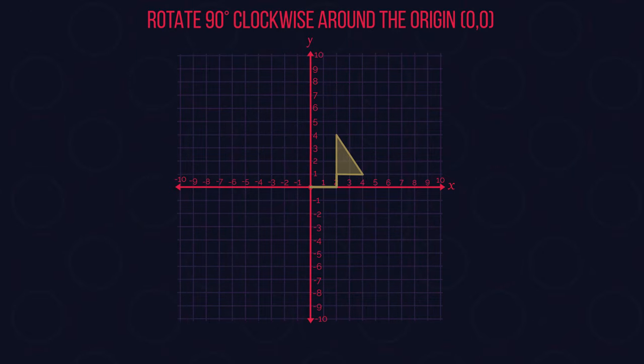So it was 2 along and 1 up, it's now going to be 1 along and 2 down. And then do the same for the other 2 corners.